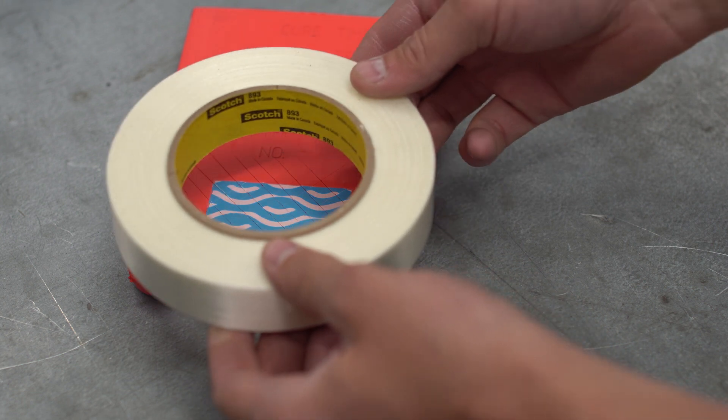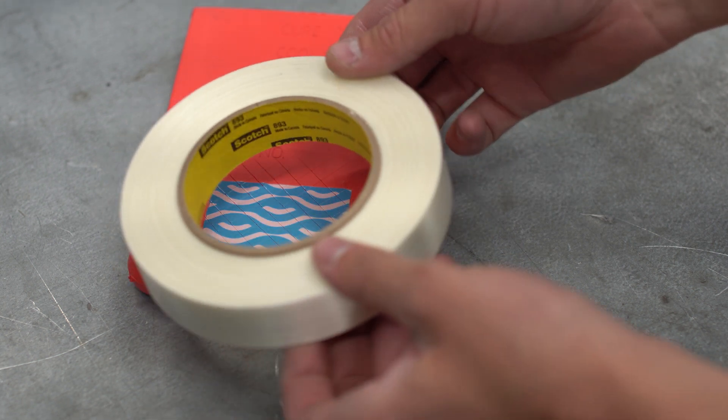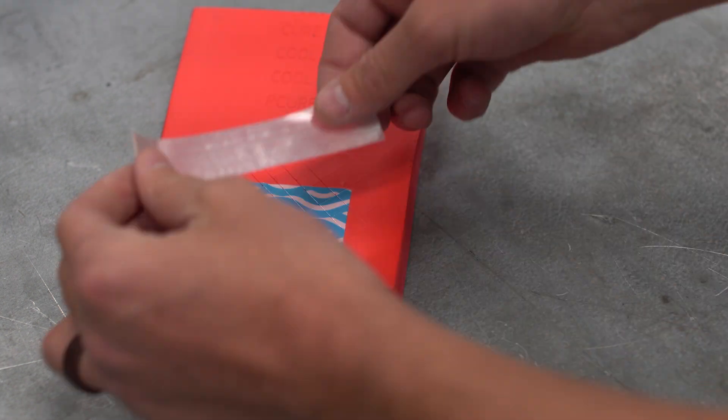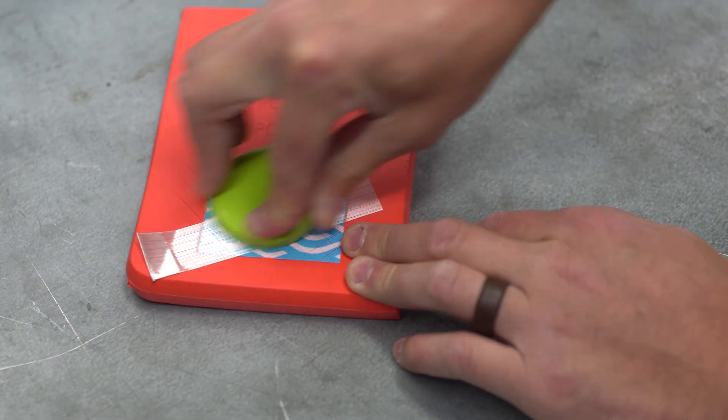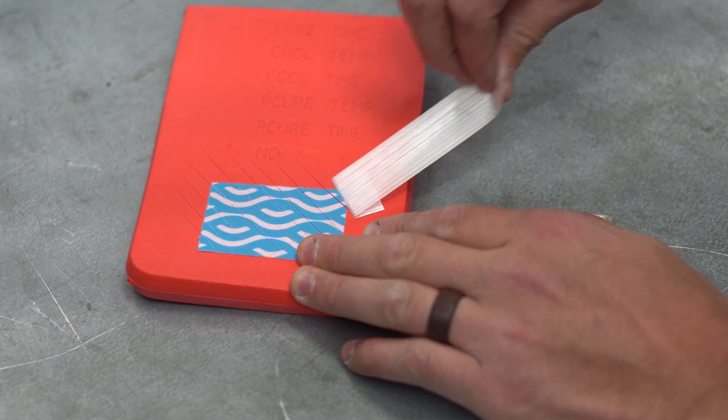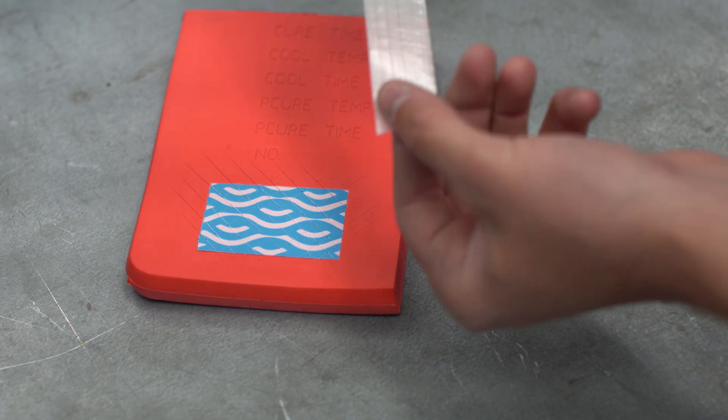Using Scotch 893 tape, one of the best adhering tapes on the market today, we are going to tape test the label. For added effect, we are going to burnish this tape on. As you can see, the label sustained no damage and there is nothing on the tape.